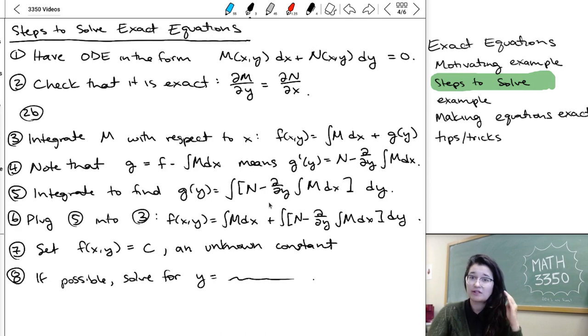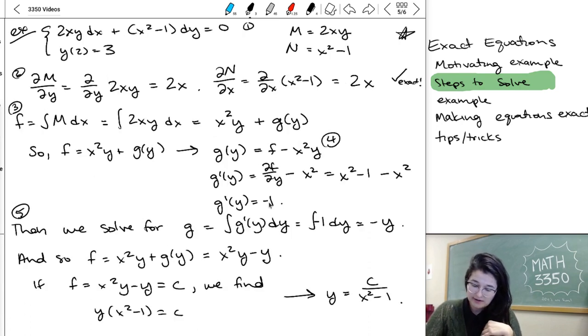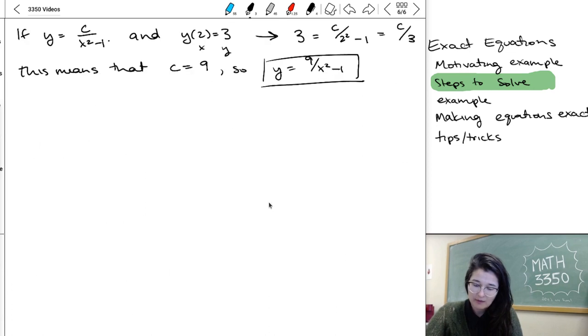And then after that, we're just plugging everything in to get a single function. So we did that here, combined the two functions and set them equal to the same constant here. And then it was possible for us in this last step to isolate y. Might not always happen, but it is nice when it does. So all of that is how we solved one of these exact equations.